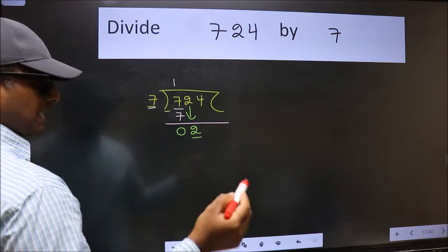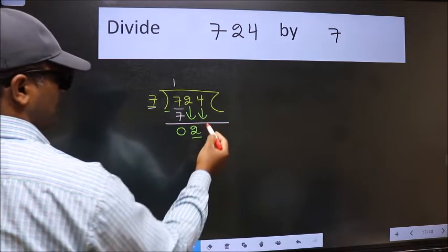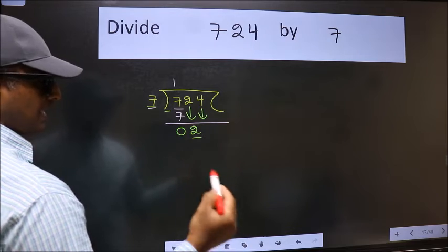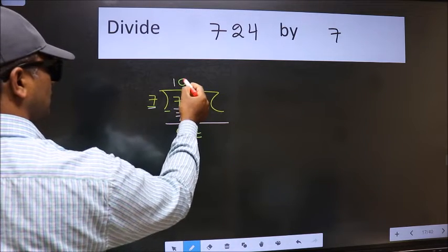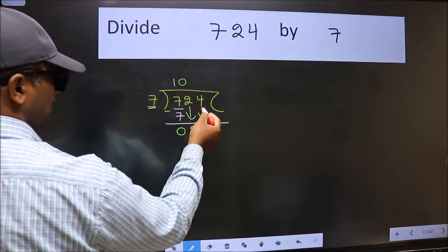So we should bring down the second number. And the rule to bring down the second number is we should put 0 here. Then only we can bring this number down.